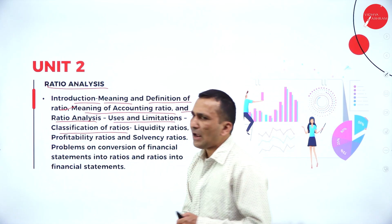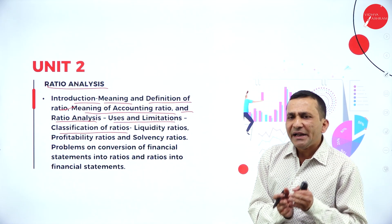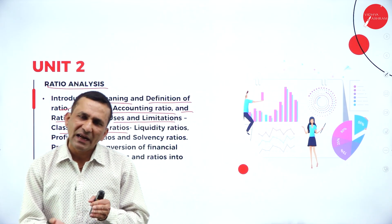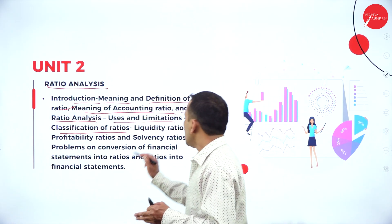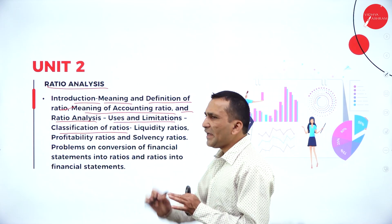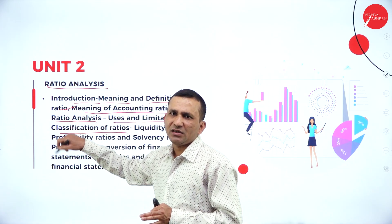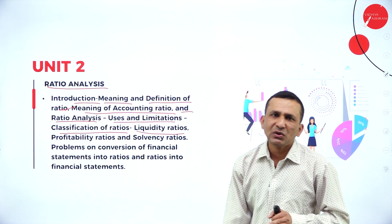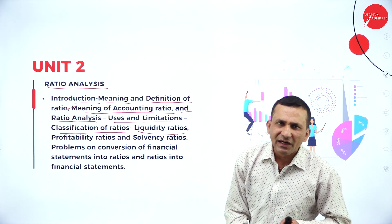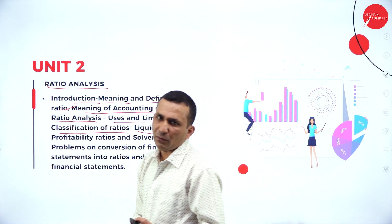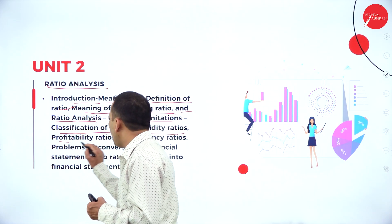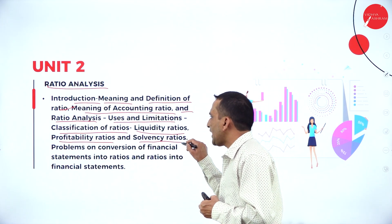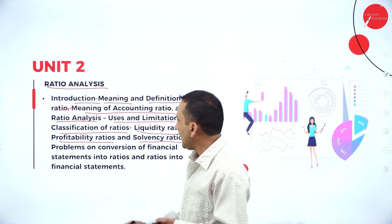Ratios are classified into a number of types. According to the syllabus, the major ratio types covered are: liquidity ratios — including all ratios under that category — profitability ratios, and solvency ratios. You will get more clarity on each of these classifications.